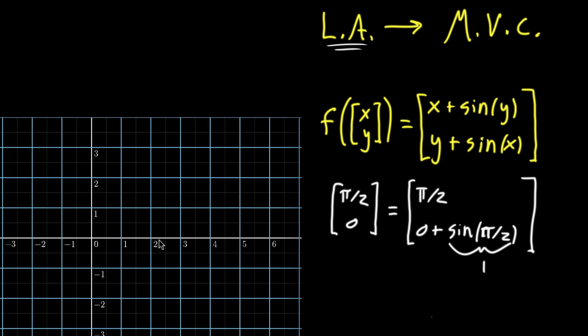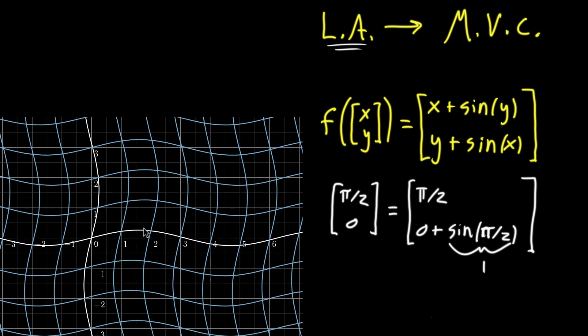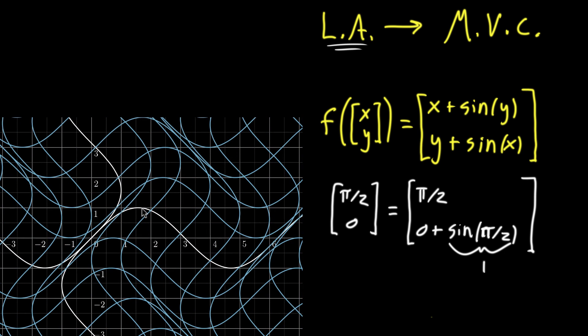So what that means on the transformation over here is if we look at the point that's at pi halves zero, and pi halves is a little above 1.5, so that's going to be around here, we expect it to move to the point pi halves one. So it should just move vertically by one unit. And if you just focus on that one point during the transformation, notice that's exactly what happens. It just moves vertically one point.